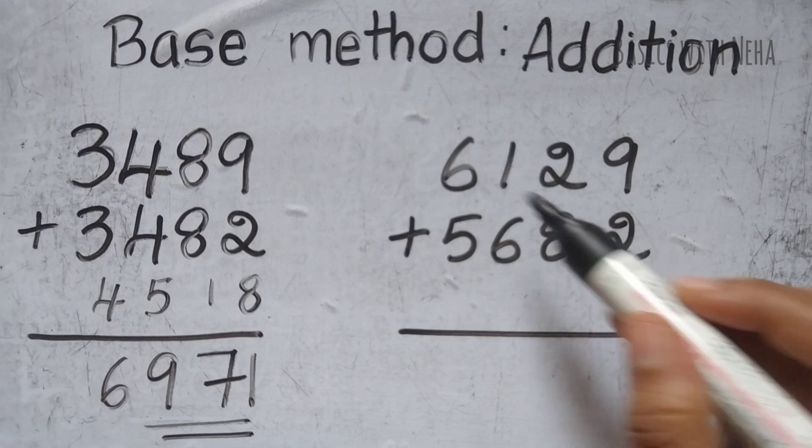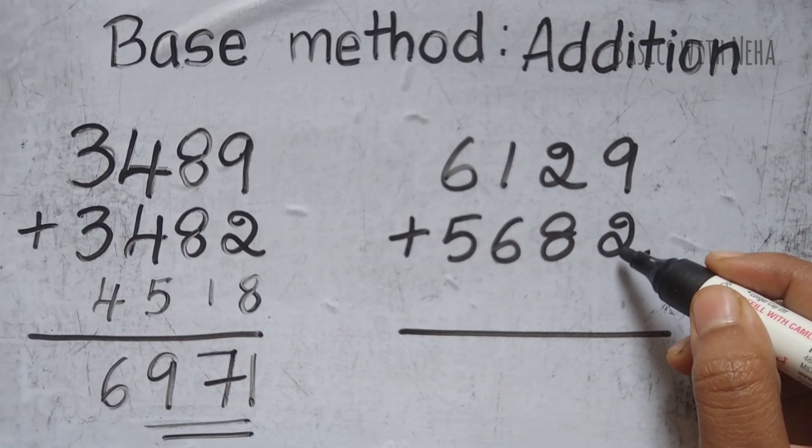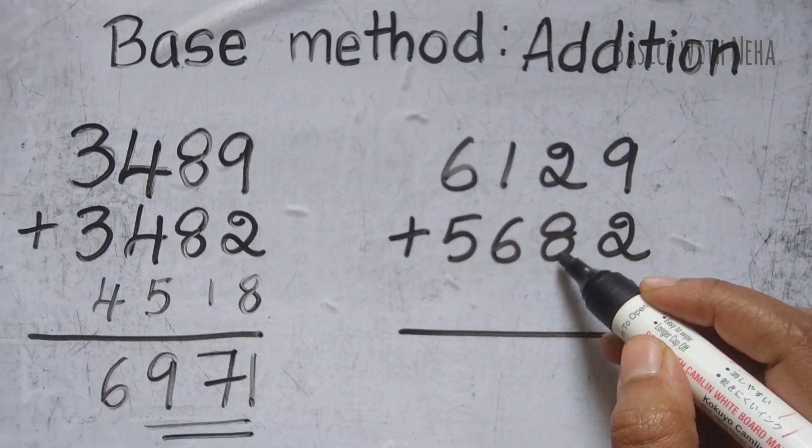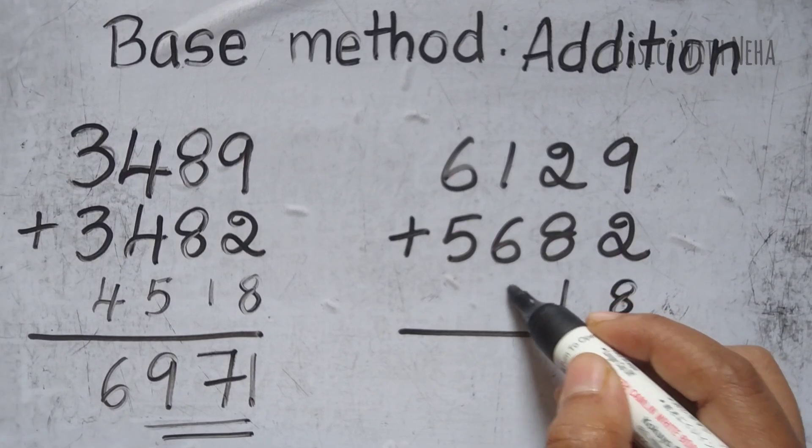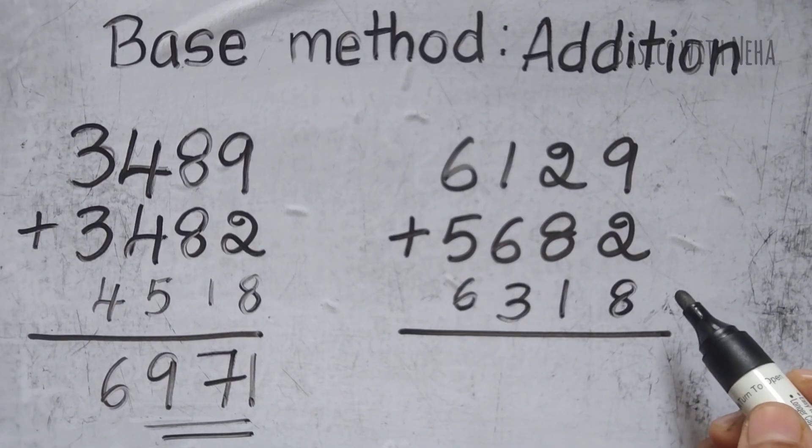The next question. 6129 plus 5682. Complement of 2 in base 10 is 8. Complement of 8 in base 9 is 1. Complement of 6 in base 9 is 3. For this whole number I'm going to take 6000 as my base.